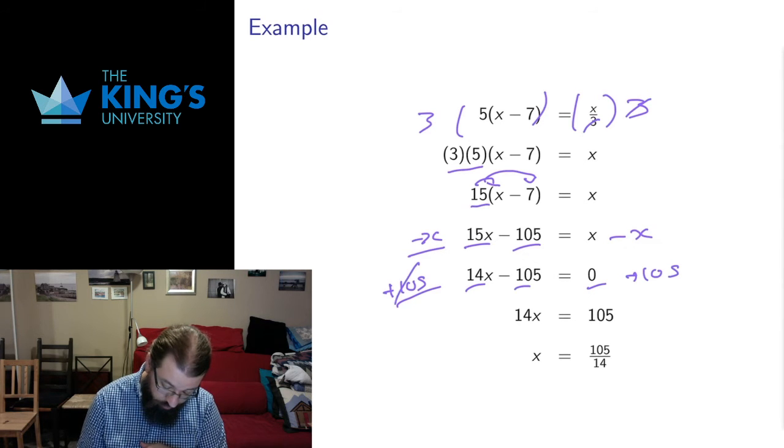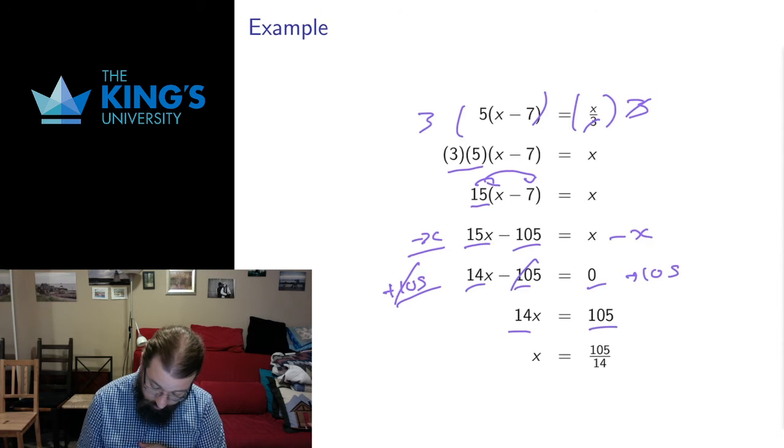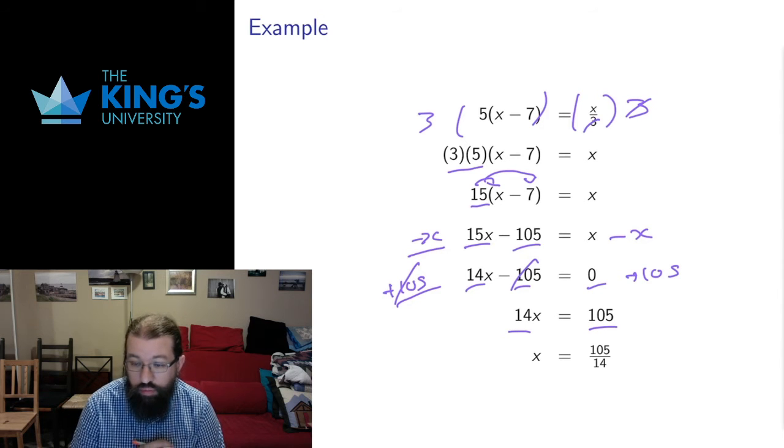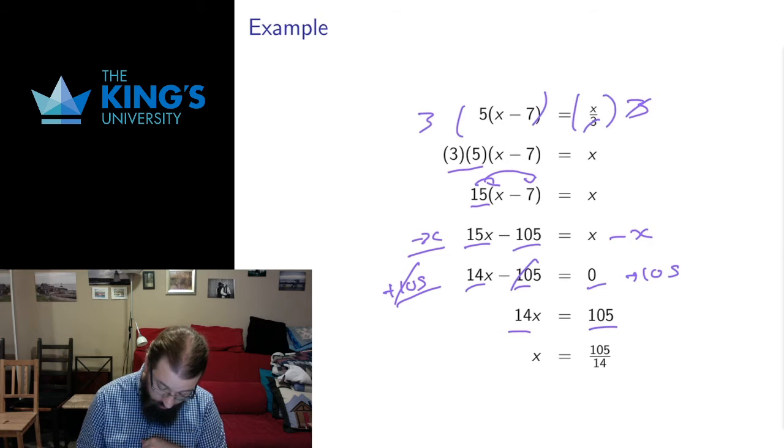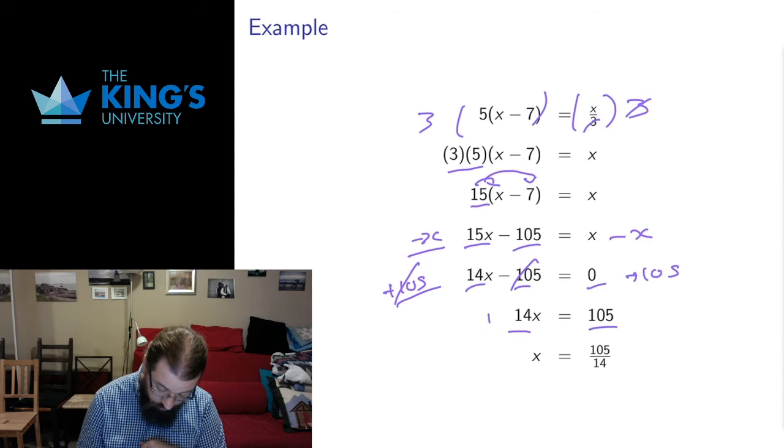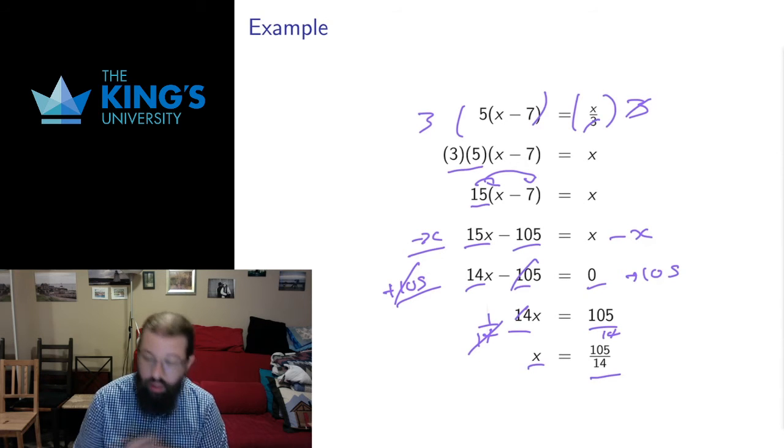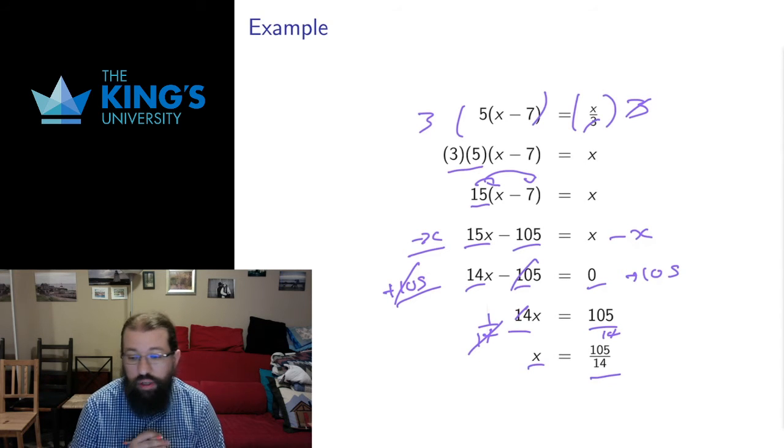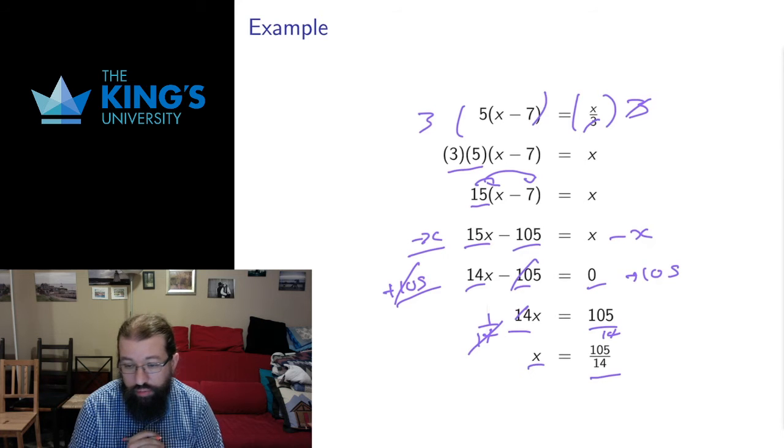Then I added 105 to both sides of the equation. Plus 105 minus 105 goes away. I get 14x. 0 plus 105 is 105. Then finally I divided by 14. 14 over 14 cancels off, so I just get the x left over and I get that the value of the variable that satisfies this is 105 over 14.